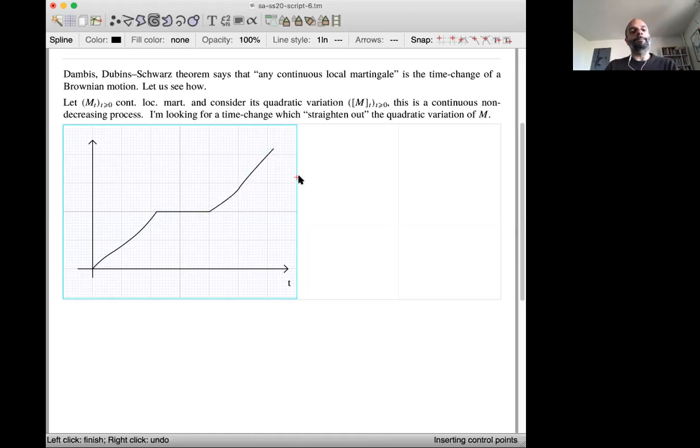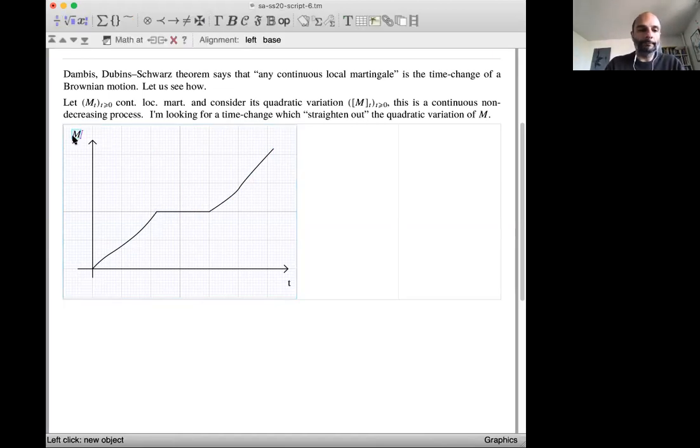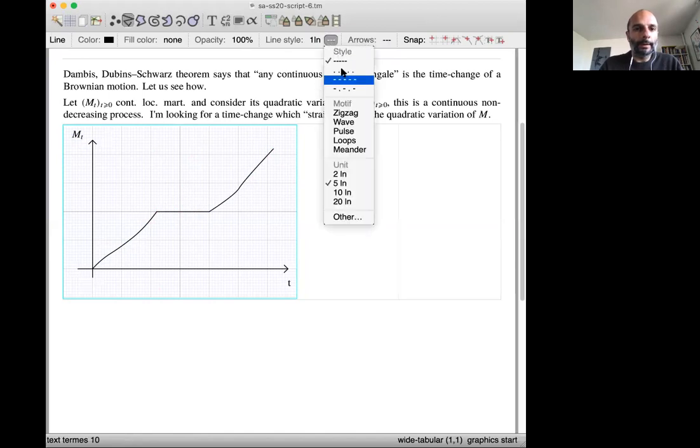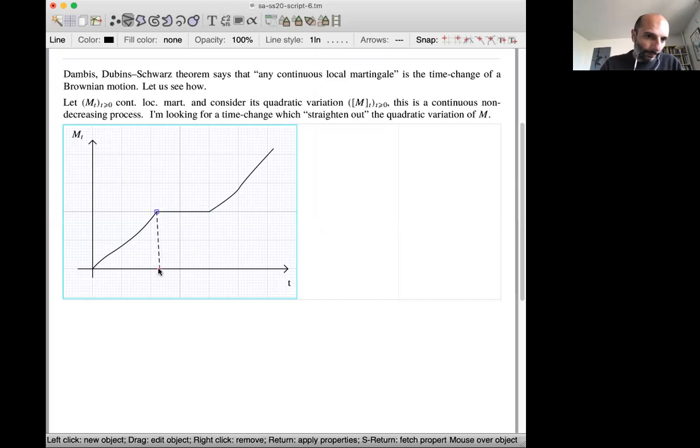You have to imagine quadratic variation in this form. So this is M of t, and then you have these points. You have these points.